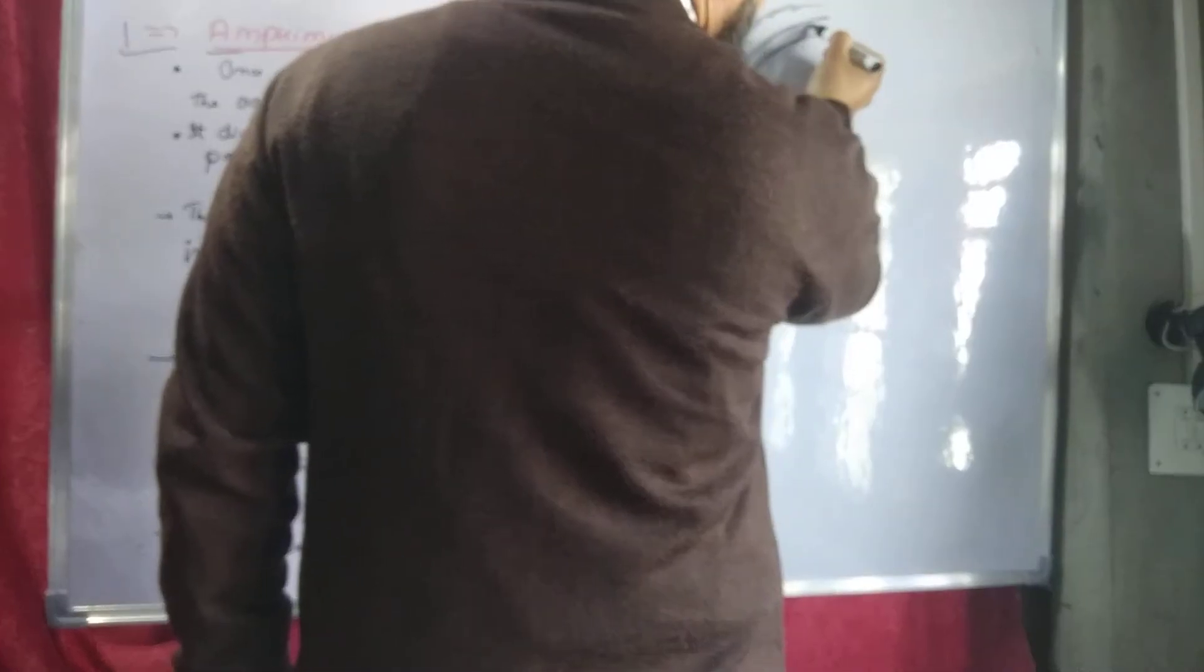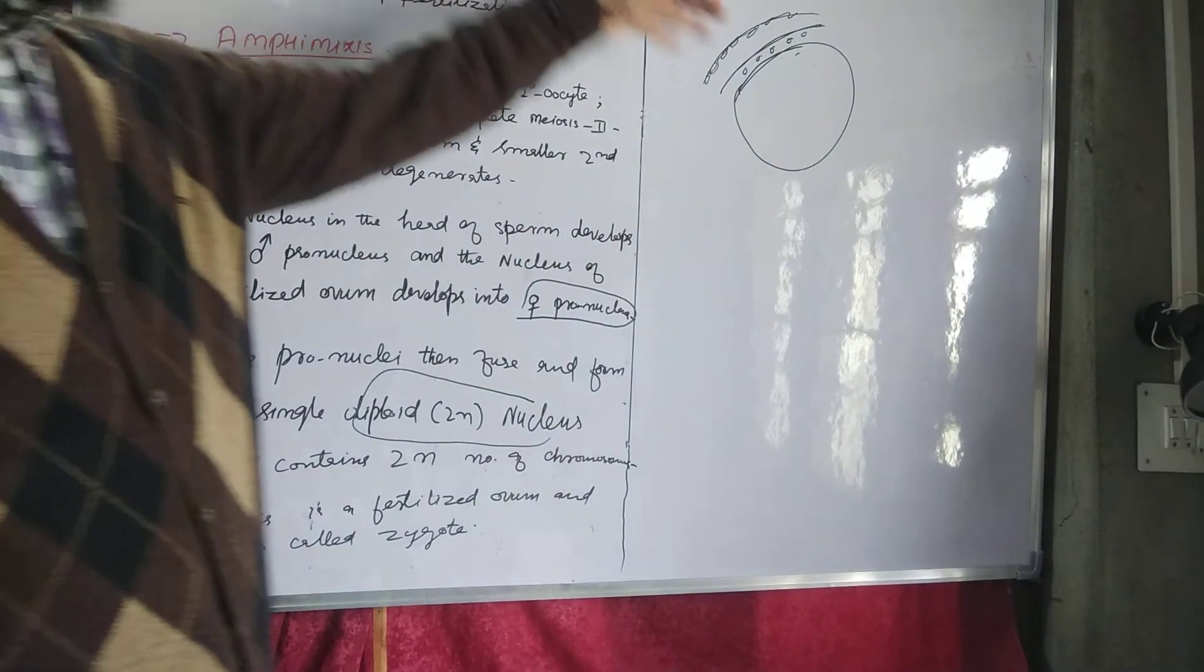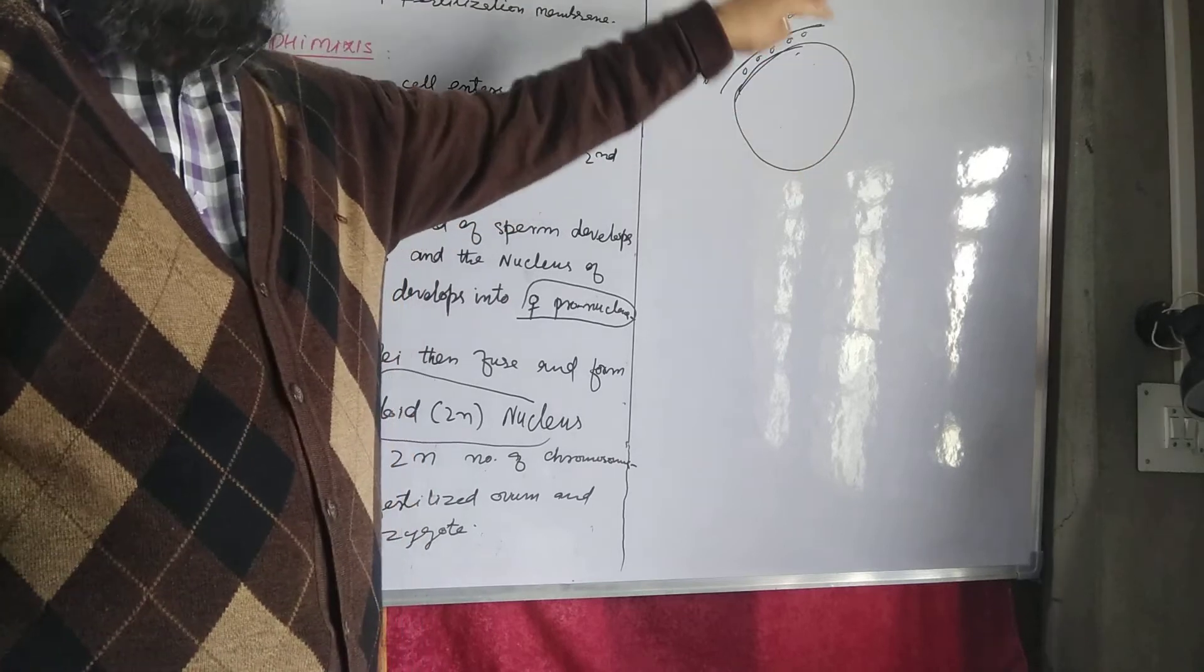Just below this zona pellucida, there are these cortical granules. So it has been complicated.